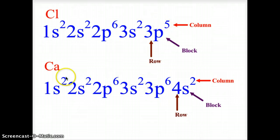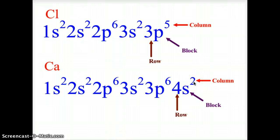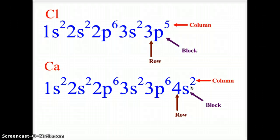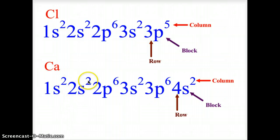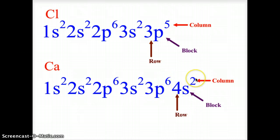Moving down to calcium. Calcium is in the fourth row, S block, second column, so 4s2 is the end of its electron configuration. All electron levels ahead of that must be filled in: 1s2, 2s2, 2p6, 3s2, 3p6. And 4s2 represents calcium's position on the periodic table — fourth row, S block, second column.